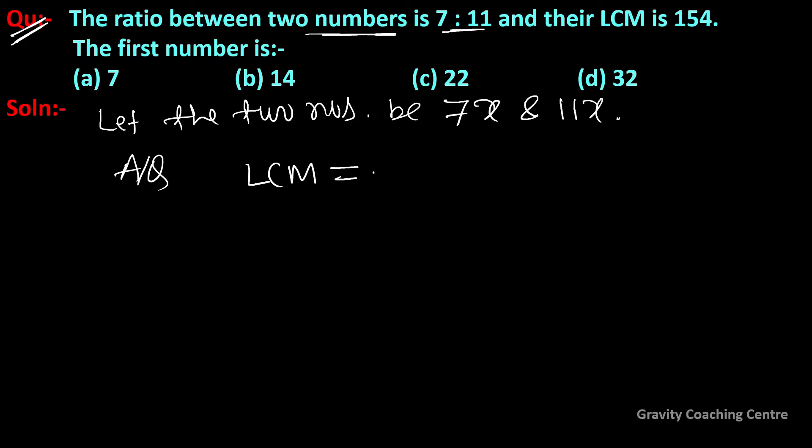The LCM of 7x and 11x equals 7 × 11 × x, which equals 154. Therefore, x equals 154 divided by (7 × 11). Canceling the terms, we get x equals 2.